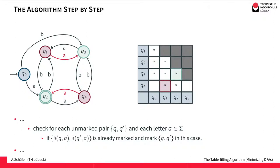Next, pair {q1, q3}: with letter a from q1 we go to q3, and from q3 with a we go to q1 — so we go to the same pair {q1, q3}, no mark. But we also consider letter b: from q1 with b we go to q2, whereas from q3 with b we go to q4. We look up {q2, q4} in the table and it has a mark, so we mark {q1, q3}. Note it was the second letter that forced this mark. For pair {q1, q4}: from q1 with a we go to q3, and from q4 with a we go to q2, so we look at {q2, q3} — it has a mark, so we mark {q1, q4}. For pair {q3, q4}: from q3 with a we go to q1, from q4 with a we go to q3, so we look at {q1, q3} — it has a mark, so we mark {q3, q4}.